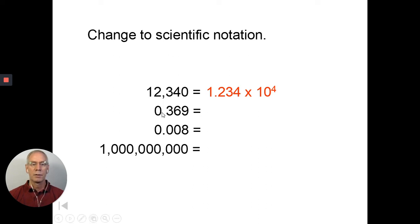This one, this zero is a placeholder. So you should write 3.69 times 10 to the negative first. This one, it has only one significant figure. So how about 8 times 10 to the negative third?